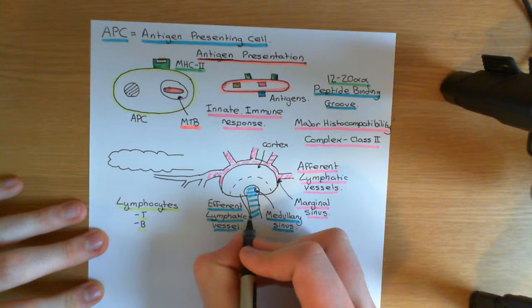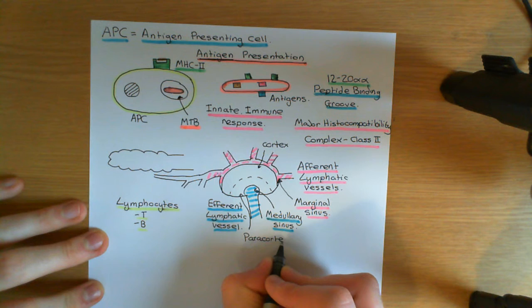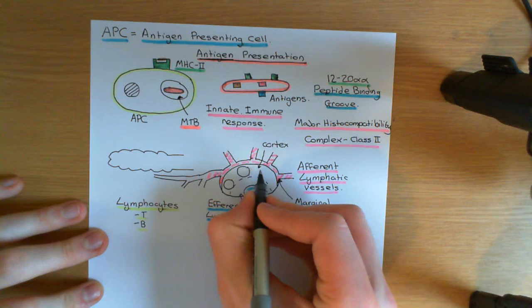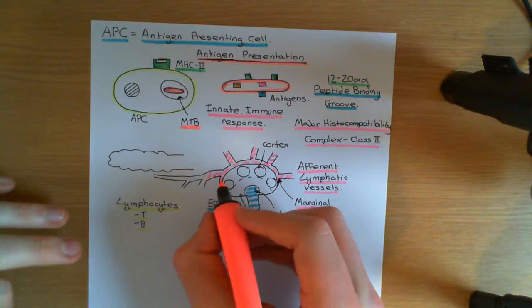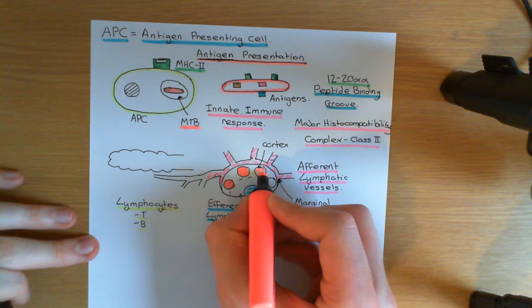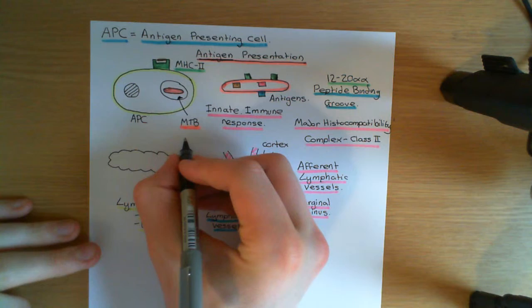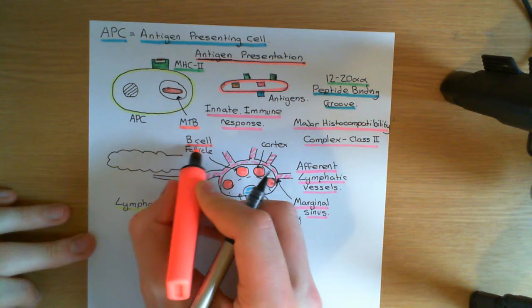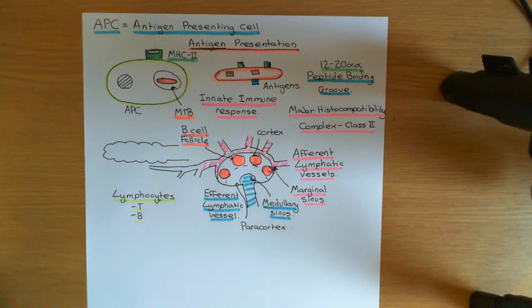The solid portion of the lymph node can be divided into two regions. The outer portion is the cortex, which contains B cell follicles — clusters of B lymphocytes in great spherical structures. The inner portion is the paracortex. All of the tissue in the cortex that surrounds the B cell follicles, and all of the tissue in the paracortex, consists of T cells. So surrounding the B cell follicles and in the paracortex, there are loads and loads of T cells.